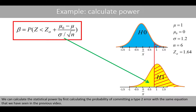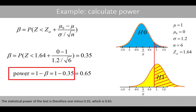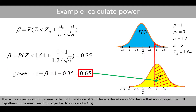We can calculate the statistical power by first calculating the probability of committing a type 2 error with the same equation that we have seen in the previous video. If we plug in the values, we see that beta is approximately equal to 0.35, which corresponds to the area to the left-hand side of the critical x-bar value of 0.8 in the alternative distribution. The statistical power of the test is therefore 1 minus 0.35, which is 0.65. This value corresponds to the area to the right-hand side of 0.8. There is therefore a 65% chance that we reject the null hypothesis if the mean weight is expected to increase by 1 kilo.